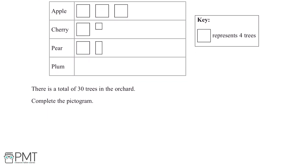The first thing we can do is count up how many apple, cherry and pear trees there are. If one large square represents four trees and there are three large squares in the apple row, each representing four trees, then this means in total there are twelve apple trees.